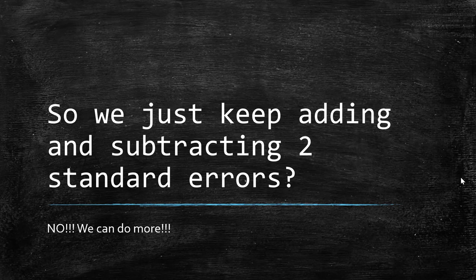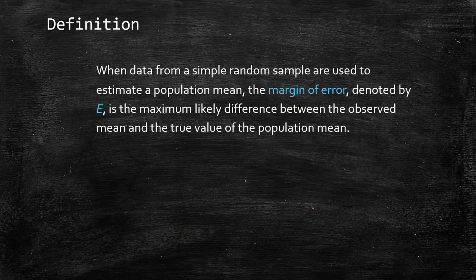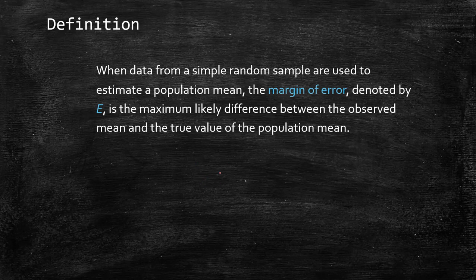So basically we're just going to add and subtract two standard errors. That's boring because remember standard error is sigma of x bar, which is sigma over the square root of n. No! We can do more than just a 95% confidence. Like I said, we can do 90 or 99%. So to begin with, we have this thing called margin of error.